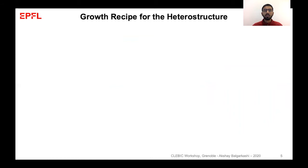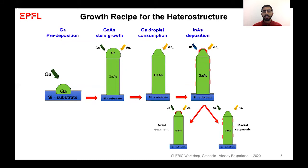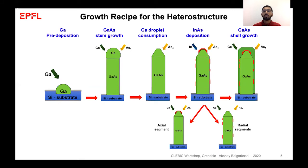Moving on to the growth recipe, we first have a substrate patterned using e-beam lithography. We deposit gallium droplets which act as a catalyst for the growth of nanowires. Then we provide gallium and arsenic fluxes; these materials dissolve into the droplet, lead to supersaturation, and then precipitate into a nanowire. After the desired length is reached, we consume the gallium droplet, then deposit indium arsenide, which can form either an axial segment or radial segments on the nanowire sidewalls. Finally, we cap these segments with a gallium arsenide shell to investigate their optical properties.